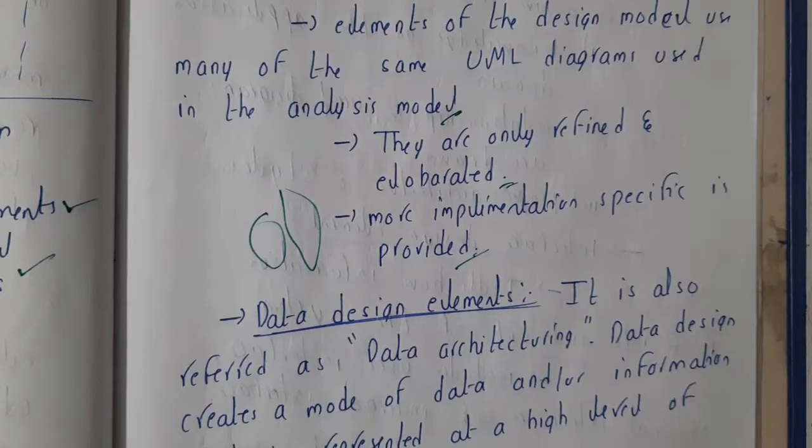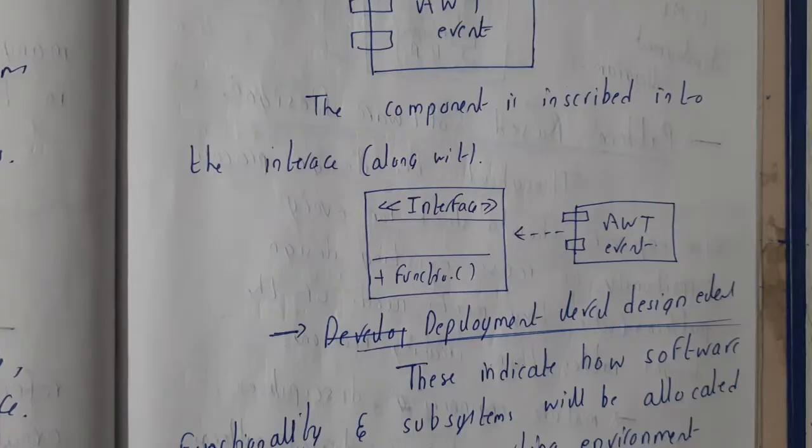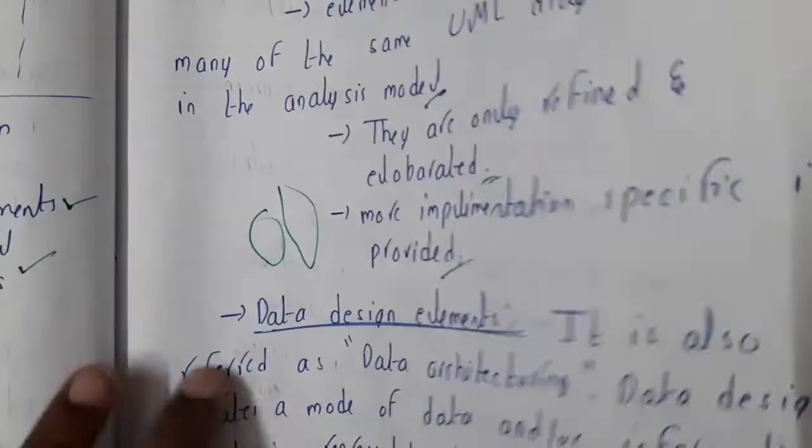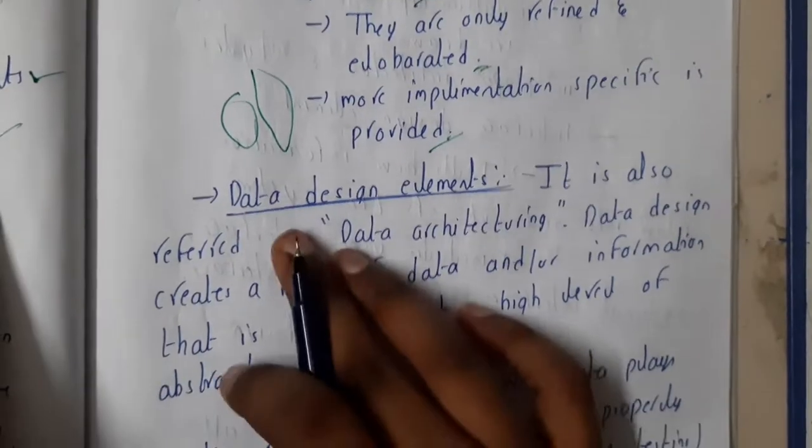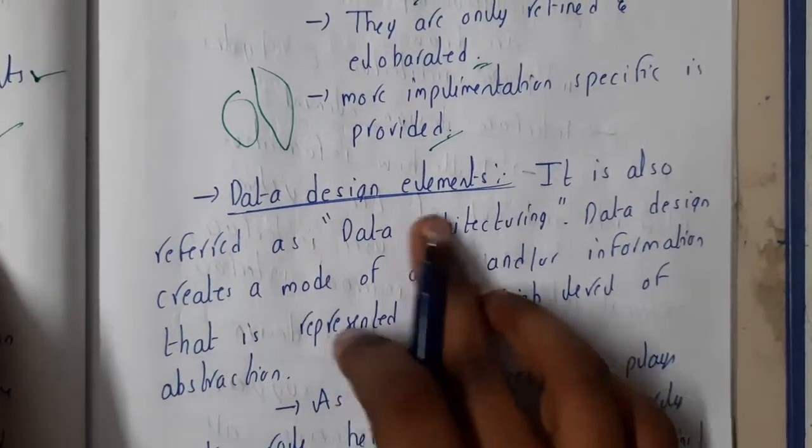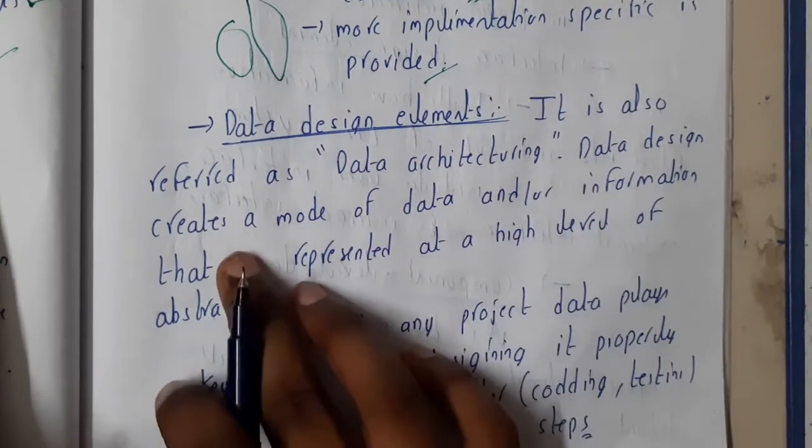First let us discuss data design elements. Data design element is also referred to as data architecturing. Data design creates a model of data and information that is represented at a high level of abstraction.